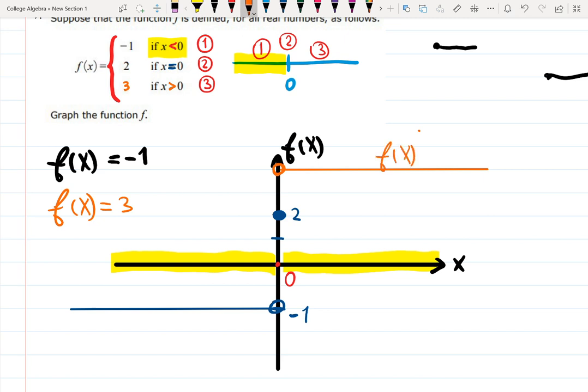When x is greater than 0, f(x) = 3 happens. When x is less than 0, f(x) = -1 happens. And what happens at 0? At 0, f(x) just equals 2. That's just a point, and that's how you graph it.